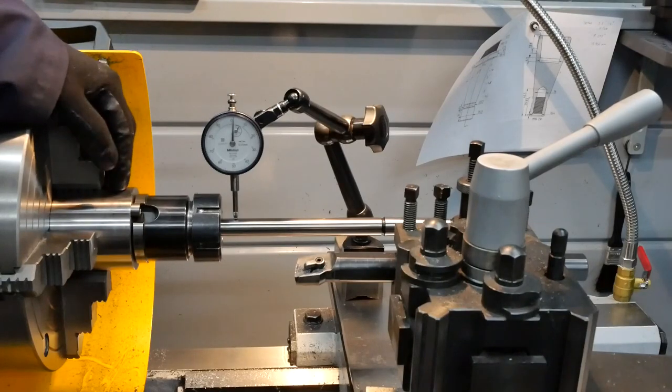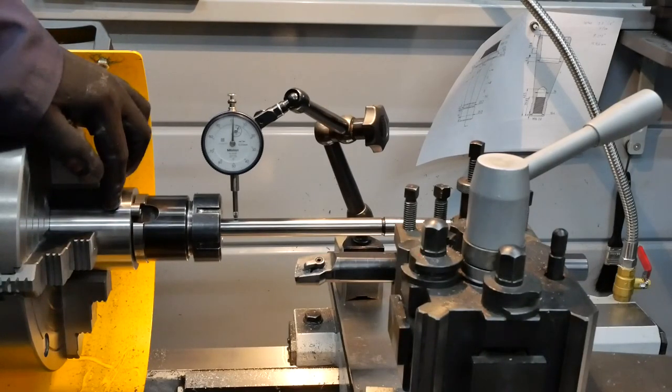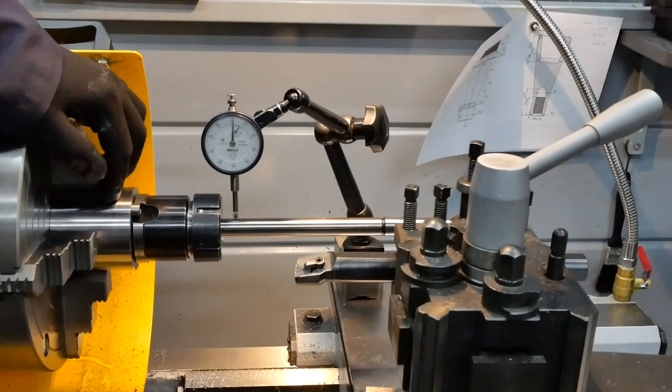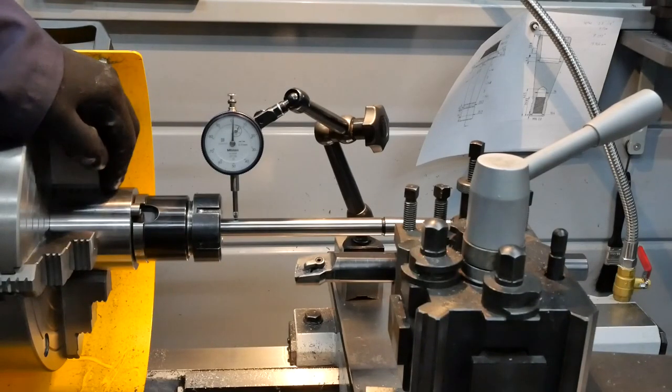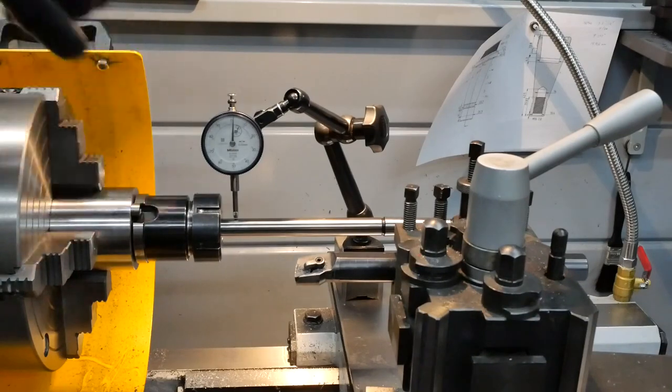So this obviously is the root cause of the problem I had when I made my ER-40 chuck in the first place. There was a problem with the bore in this, which transferred itself to the alignment of the two tapers on the ER-40 - well, on the collet chuck that I made. So, problem fixed.